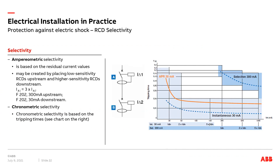There are two options for selectivity. One is to rate the upstream RCD at three times the sensitivity current of the downstream RCD. This is called amperometric selectivity and provides only partial selectivity. The second option, so-called chronometric selectivity, provides full selectivity and can be achieved by using selective versions of RCDs.